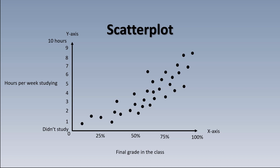You can see these dots tend to show a pattern — they rise up the further we go to the right. This is a positive correlation. A positive correlation means that when one variable increases, like time spent studying, so does the other variable, which is final grade. Notice that I use an addition symbol instead of writing out positive, because in psychology, students often confuse positive and negative with good and bad — but in this case, positive just means an increase.